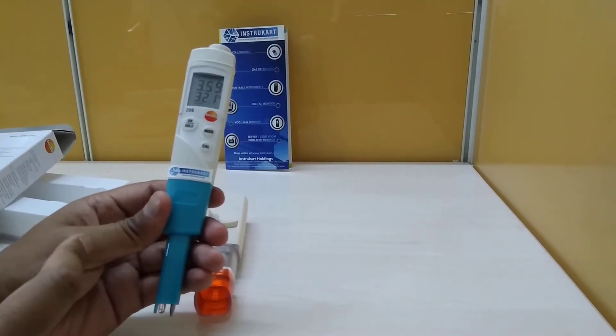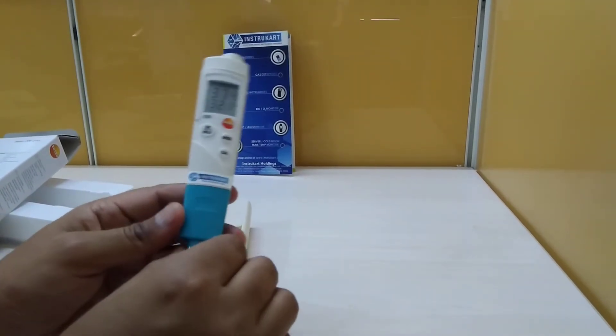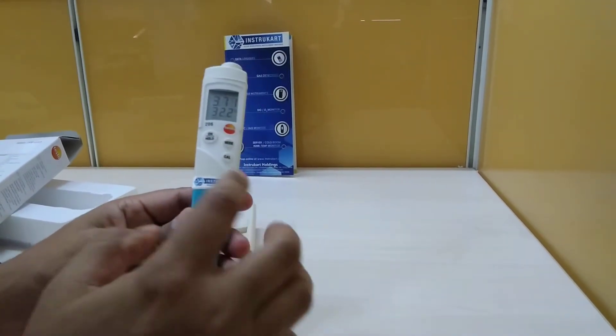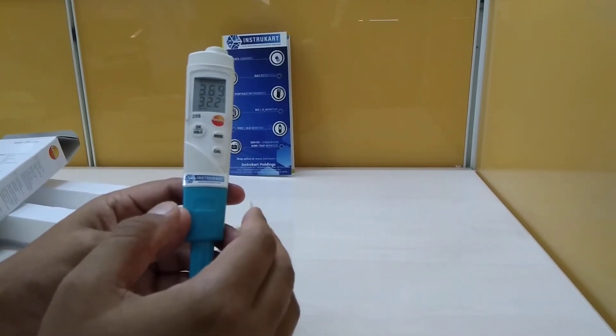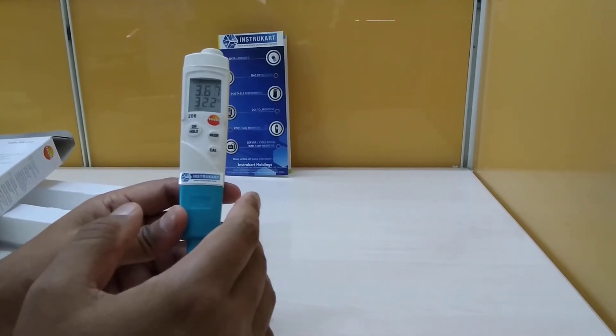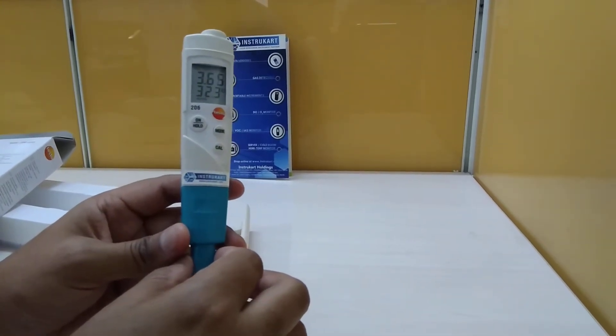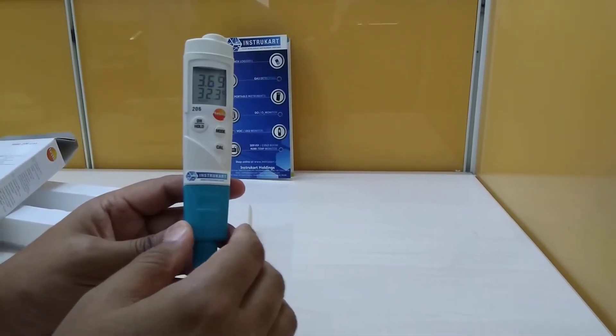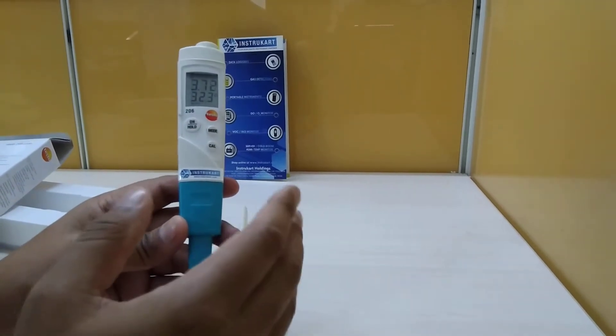This instrument has two parameters: pH and temperature. It has a pH electrode sensor and a measuring range of 0 to 14 pH with a temperature of 0 to 60 degrees Celsius, short term to 80 degrees Celsius.